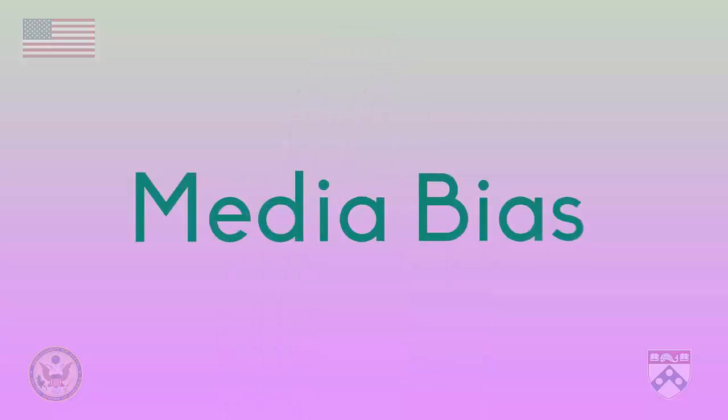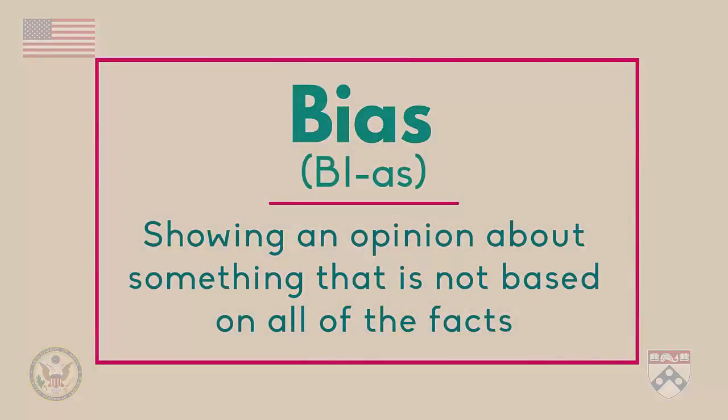Hello. Earlier in this unit we talked about how media is constructed. Now in this video we're going to look at how that media can be biased. We know from earlier in the course that bias is showing an opinion about something that is not based on all of the facts. We're going to introduce three types of bias which we'll discuss in more detail later in the unit.